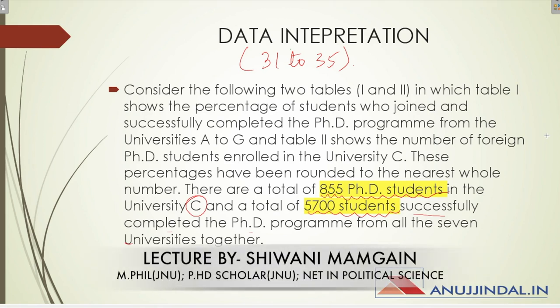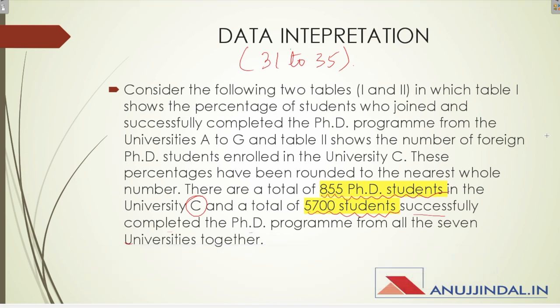Hi everyone, today we will continue solving the UGC NTA NET paper, 18 December 2018 second shift. So far we have completed 30 questions in the last video. Now we're going to solve the next 20 questions in this video. Let's start with the 31st question. The first five questions will be from data interpretation, so it is very important to read the information carefully. Note that there are 855 PhD students in university C and a total of 5700 students who have successfully completed the PhD program.